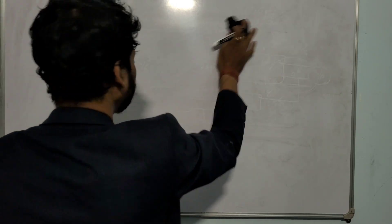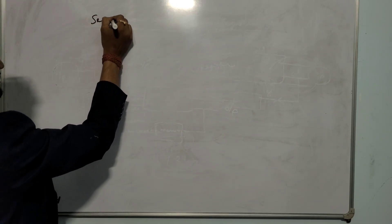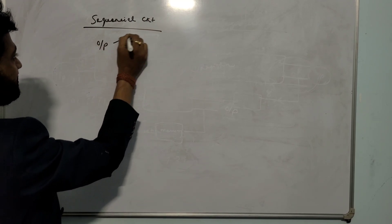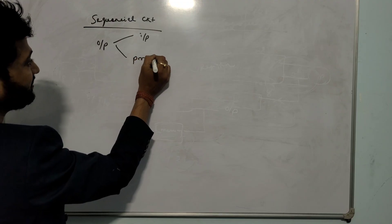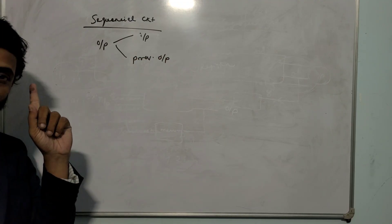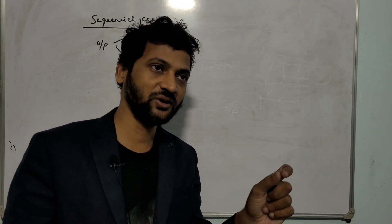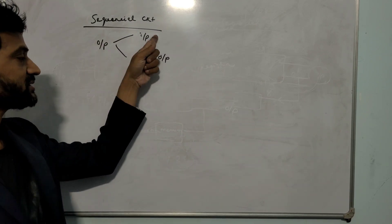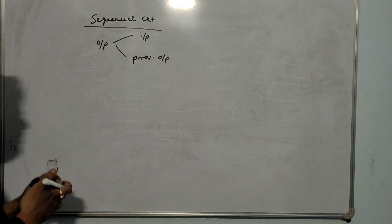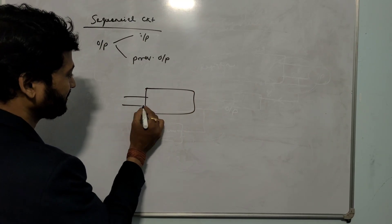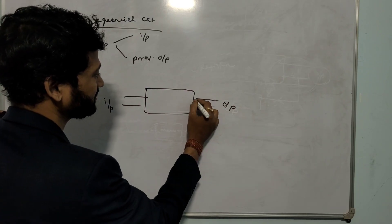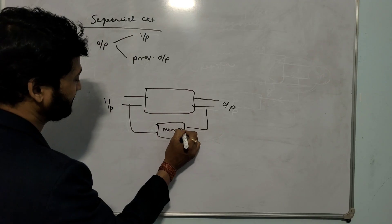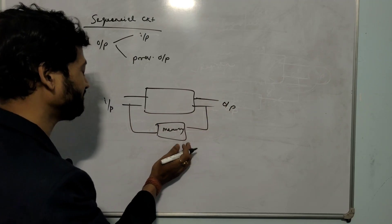Now coming to the sequential circuit. In a combinational circuit, the output depends on input — any changes in input affect the output. But in a sequential circuit, the output depends on two factors: the current input and the previous output. This is the block diagram: input on one side, output on the other, and the output also depends on the previous output stored in memory.